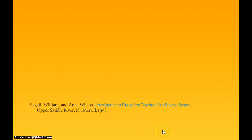Here we have a citation for a book that has more than one author. The parts of this citation include the author names, a book title, the place of publication, the publisher name, and the year the book was published. Let's take a closer look at these parts.